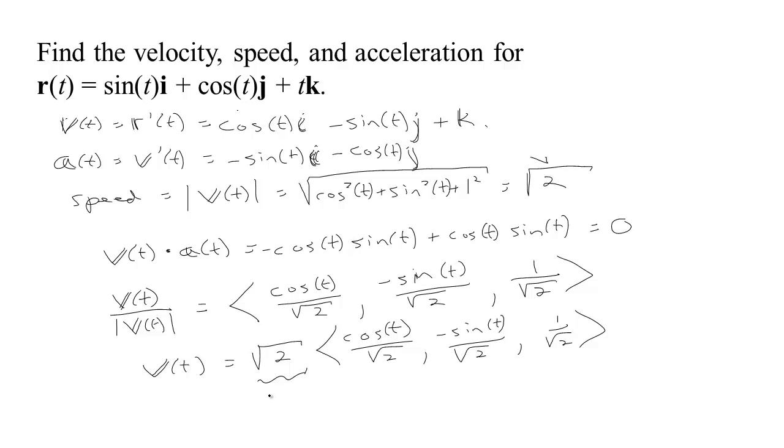This is just pointing out that every vector consists of two things: a magnitude, and in the case of velocity, the magnitude of velocity is speed, and a direction. So that's what a vector is, an arrow with length and direction.